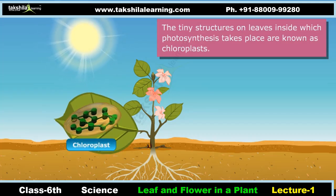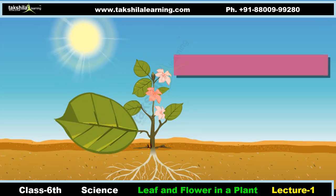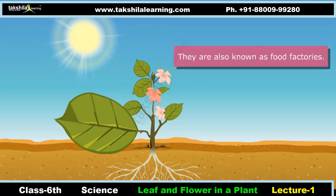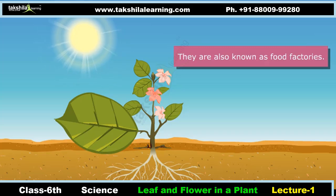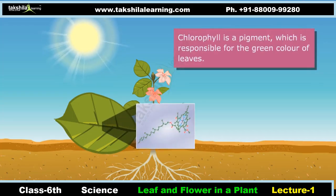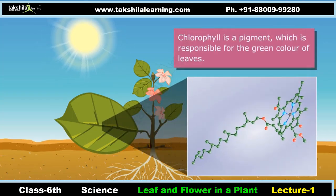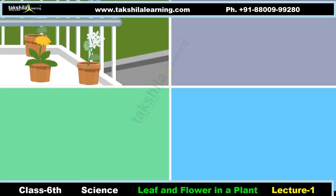The tiny structures inside the leaf in which photosynthesis takes place are known as chloroplasts. Due to their role in food production, they are also known as food factories. Chloroplasts are green in color and get their color from a pigment called chlorophyll. Chlorophyll helps leaves prepare food.